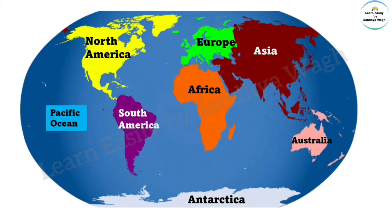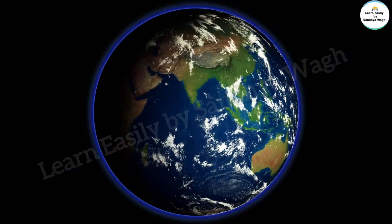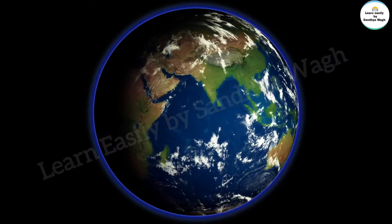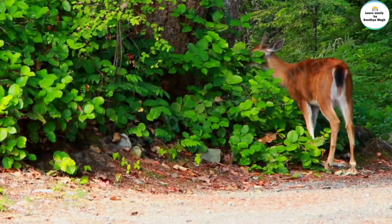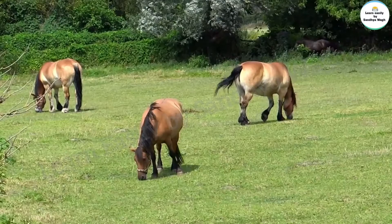The five oceans are the Pacific Ocean, the Atlantic Ocean, the Indian Ocean, the Arctic Ocean, and the Southern Ocean. The largest is the Pacific Ocean and the smallest is the Arctic Ocean. Our Earth is a unique planet because Earth is the only planet where we get to see living things.